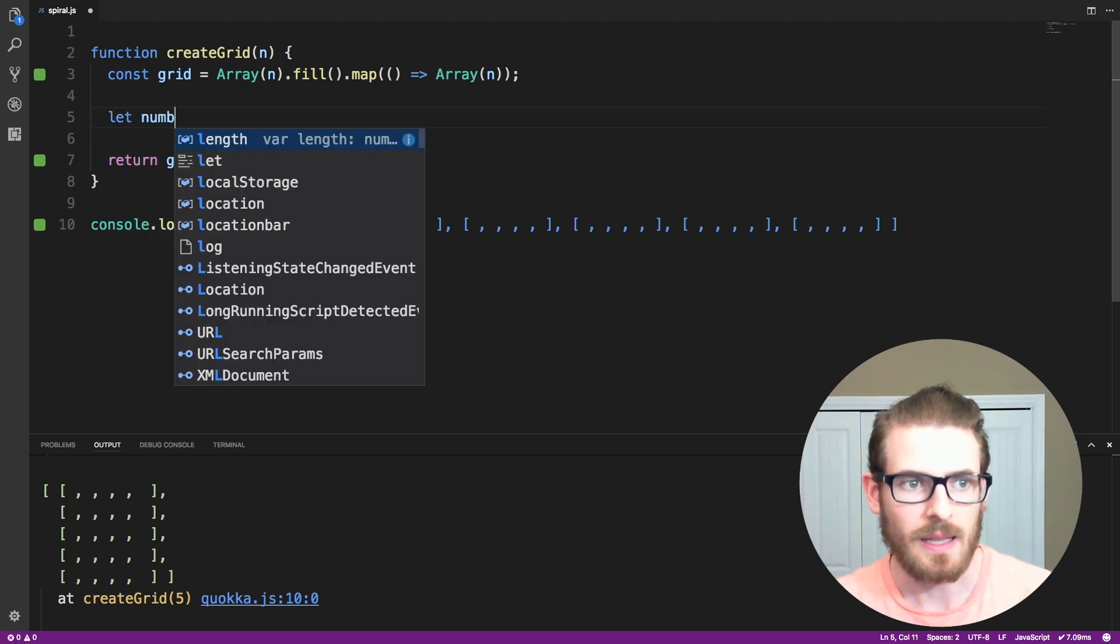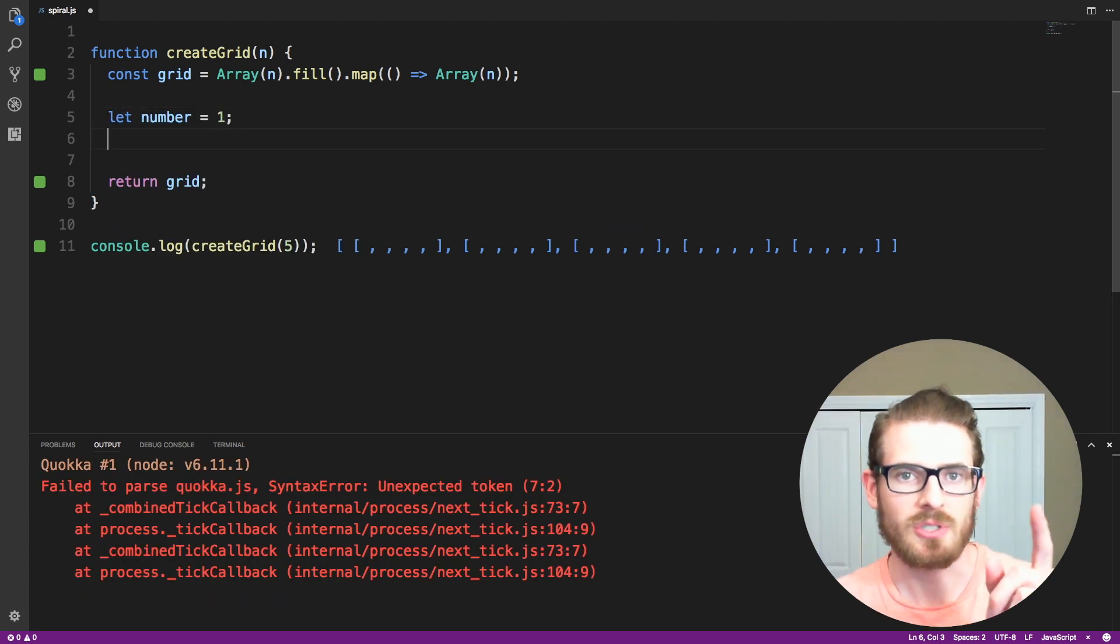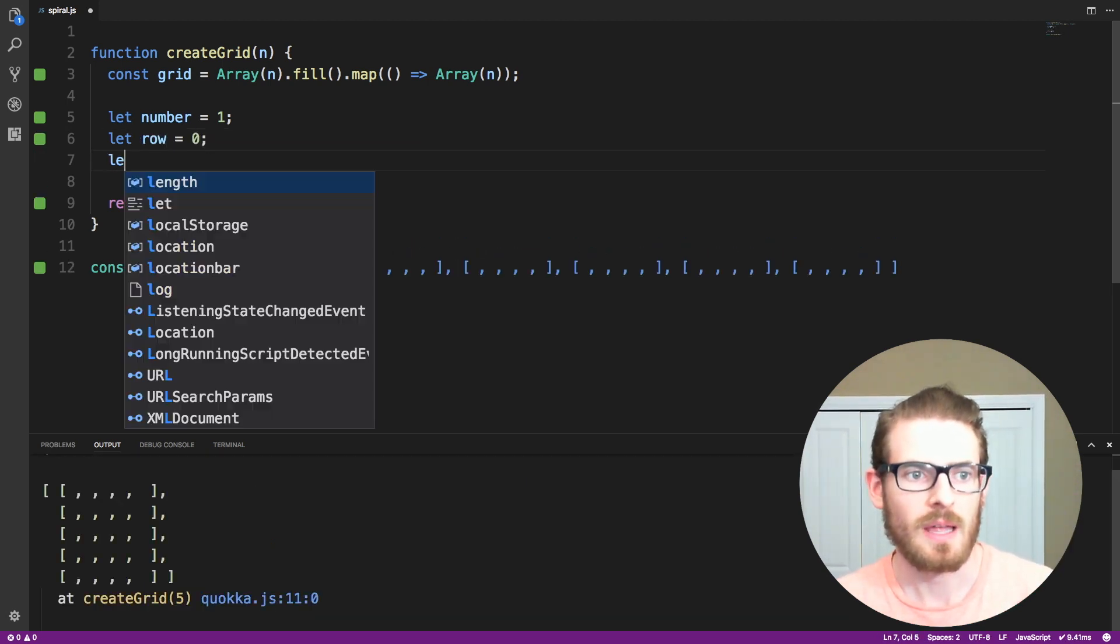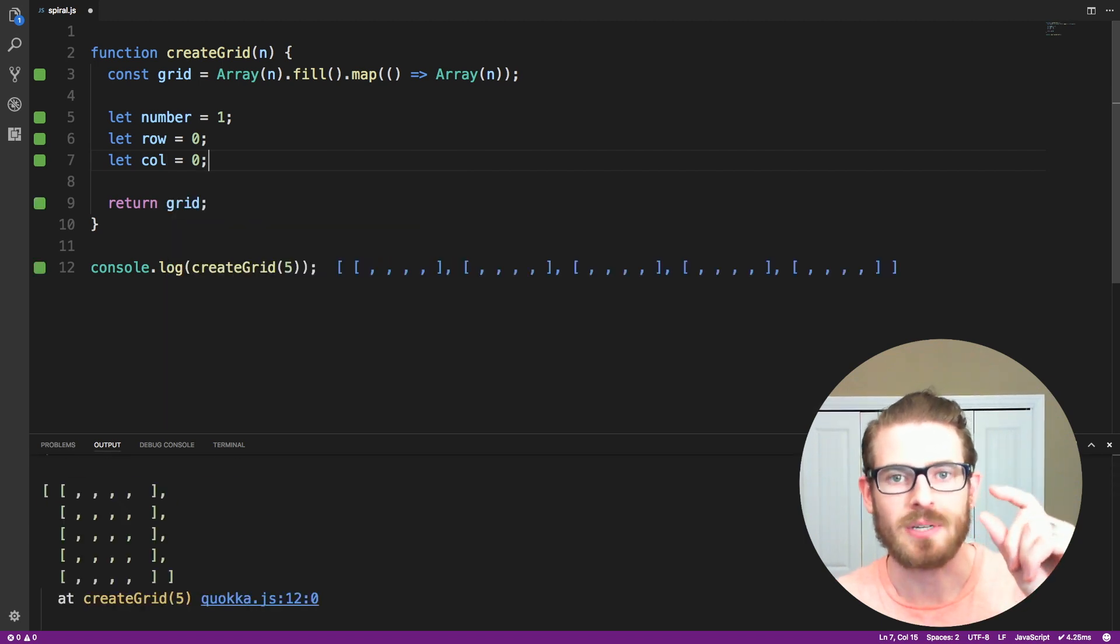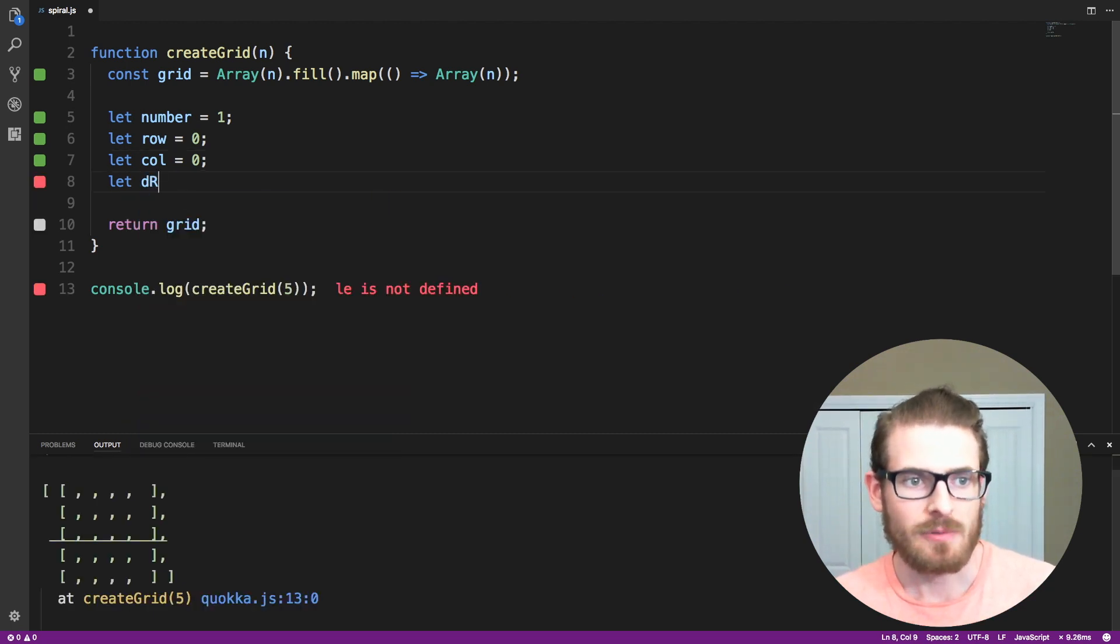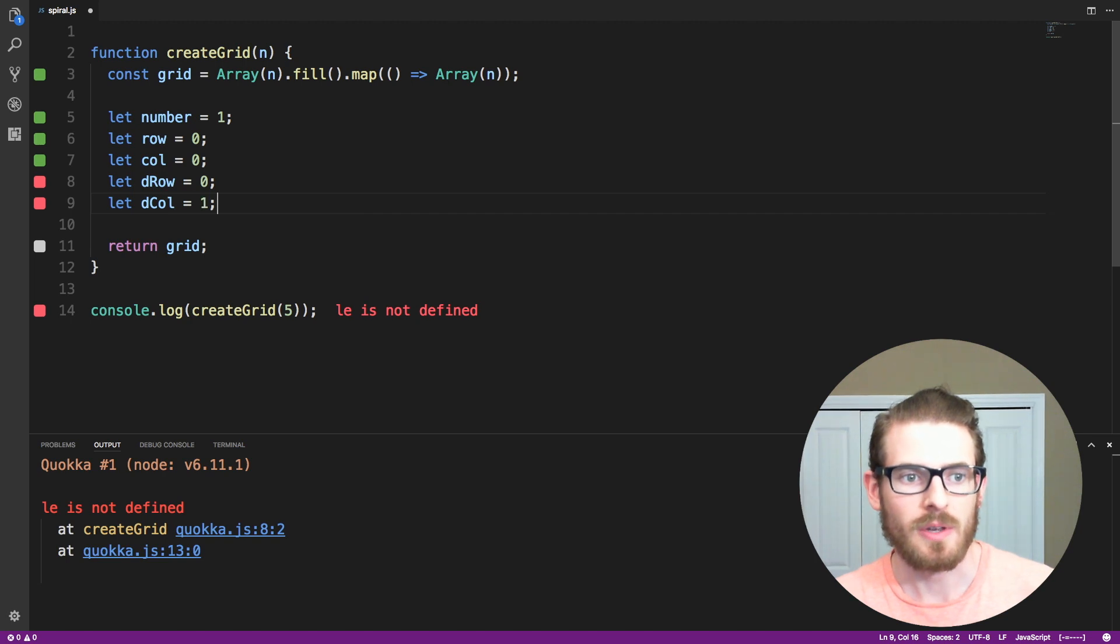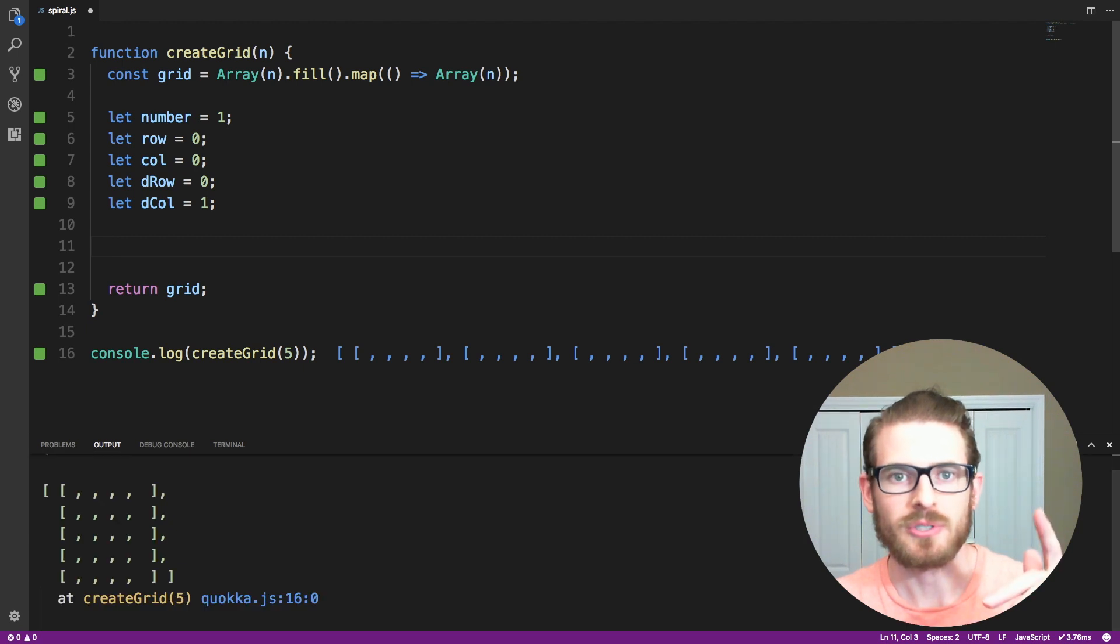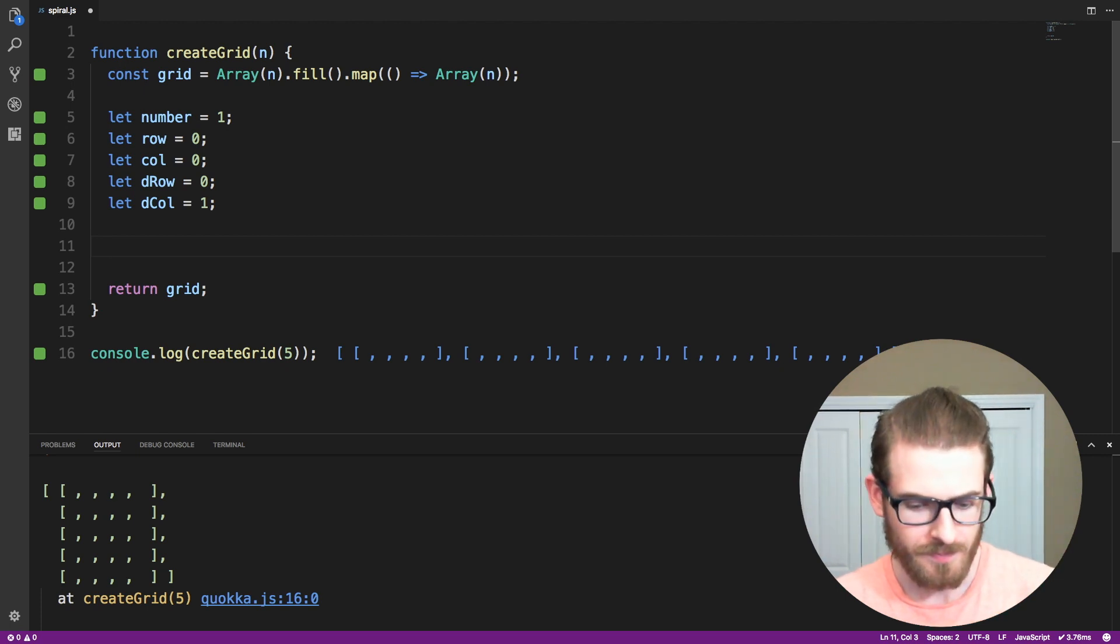So now that we have a blank to our n by n grid, we can go ahead and start declaring those variables like we used on the whiteboard example. So starting off, I can say let number equals to 1, which is going to be the first number that we start off, and it's also the x that we used in the whiteboard. We can say let row is equal to 0, let column is equal to 0, which are going to be used for representing the exact element location that we're at in the grid. We can say let drow is equal to 0, and let dcolumn is equal to 1, which is going to be the initial direction, which will be in the right direction, or going from left to right, that we need to traverse the grid in.